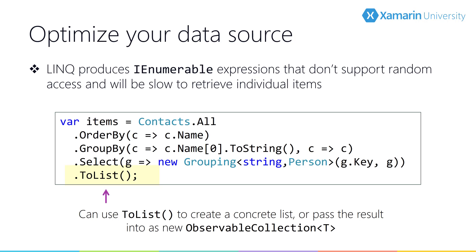Let's talk about our data. LINQ is awesome, but it produces read-only, forward-only enumerable collections that can't be efficiently data-bound because they don't support random access, and also causes issues when updating collections. Always convert them to a list by calling ToList on that collection.